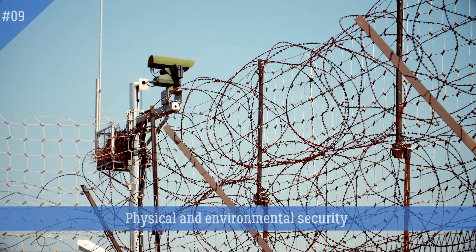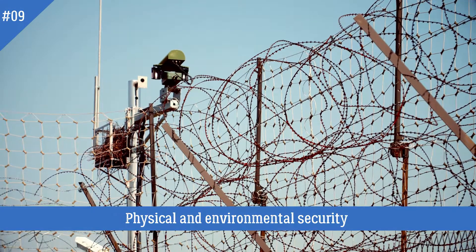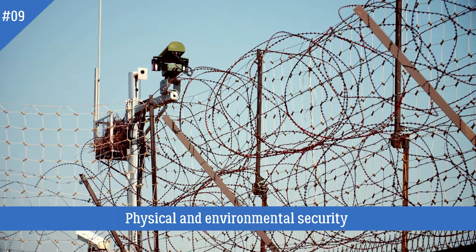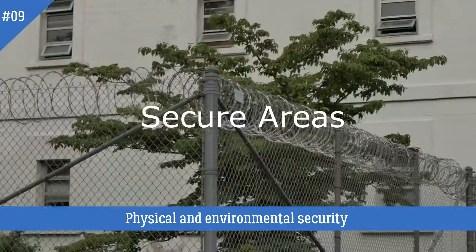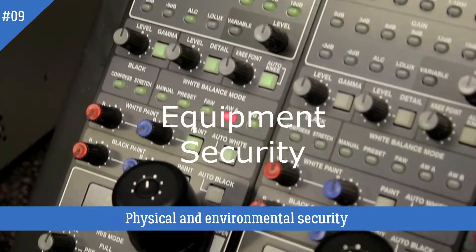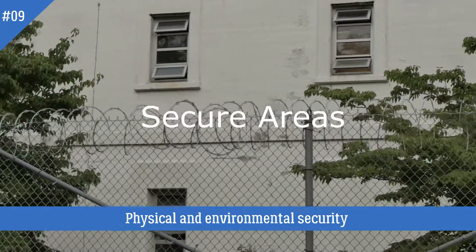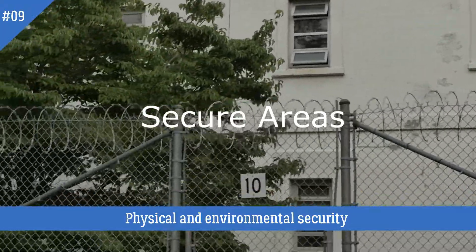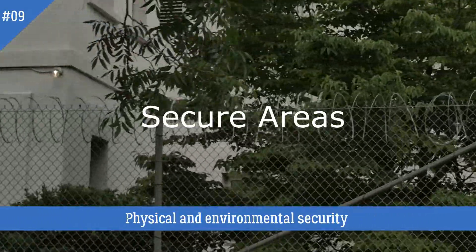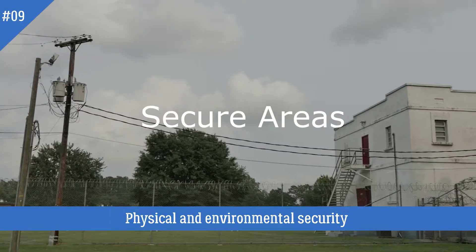Let's discuss physical and environmental security. This policy fundamentally mentions the need for policies covering secure areas, equipment security, and different controls associated with them. The objective of the secure areas policy is to prevent unauthorized physical access, damage, and interference to the organization's premises and information.